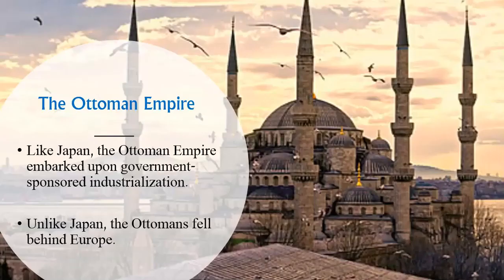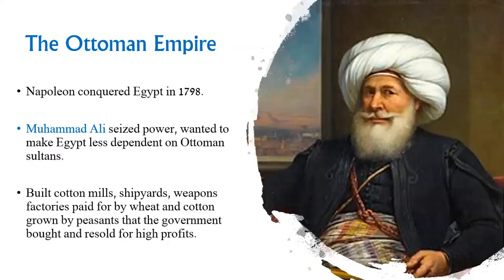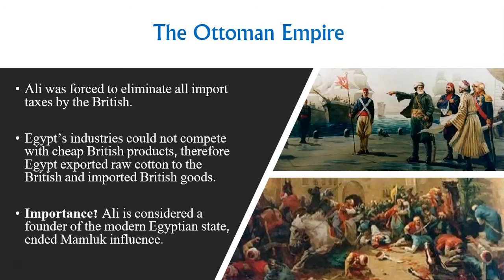Finally, Ottoman industrialization. The Ottomans wanted in on the fun but didn't succeed like the Japanese did. There was a leader named Muhammad Ali — not to be confused with the boxer — an Albanian Ottoman officer who rose to prominence and became the new governor of Egypt. The sultan basically let him do what he wanted. He acted independently of the sultan, started fights with other countries without telling the sultan, remade the military based on the European model, sent military officers to be educated in France, and started the first official newspaper in the Islamic world. He pushed Egypt to industrialize. He was forced to eliminate all import taxes by the British, but is considered the founder of the modern Egyptian state.